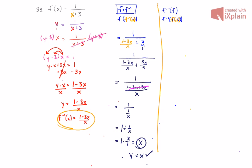Just because you get the identity function the first time doesn't necessarily mean you'll get it the second time, so it's important to continue. Now we compute f inverse of f of x. This time our base is the inverse function, so we have (1 minus 3 times [1/(x+3)]) all over [1/(x+3)], since 1/(x+3) is replacing the x value.